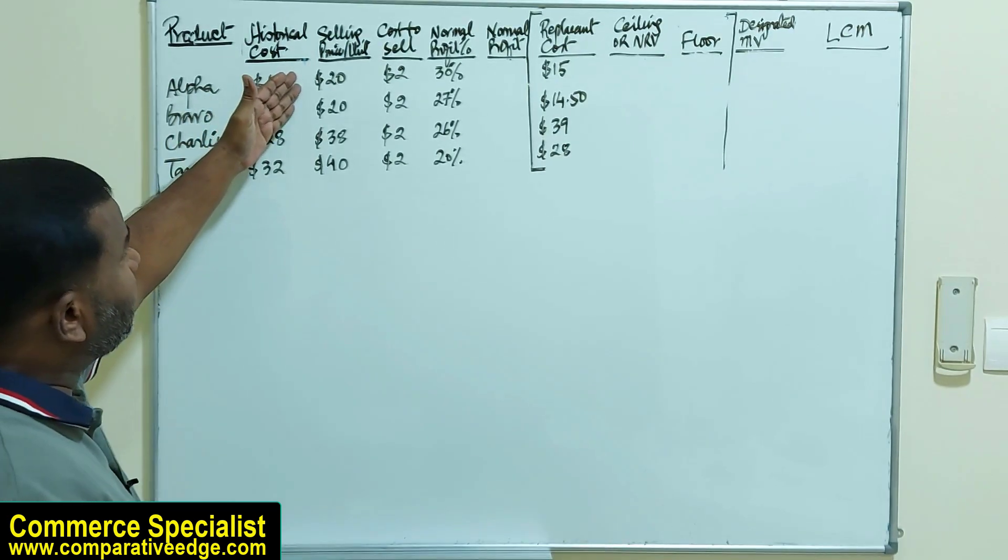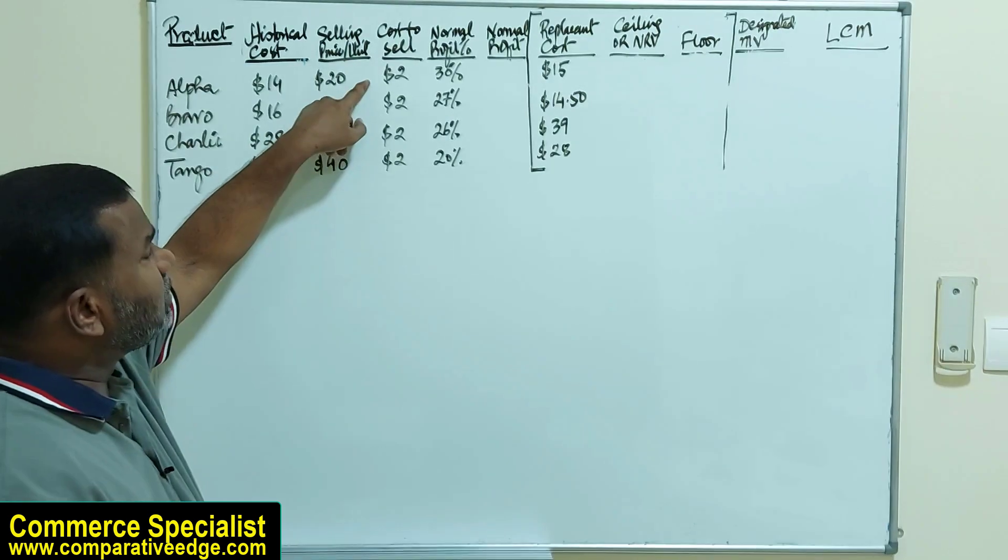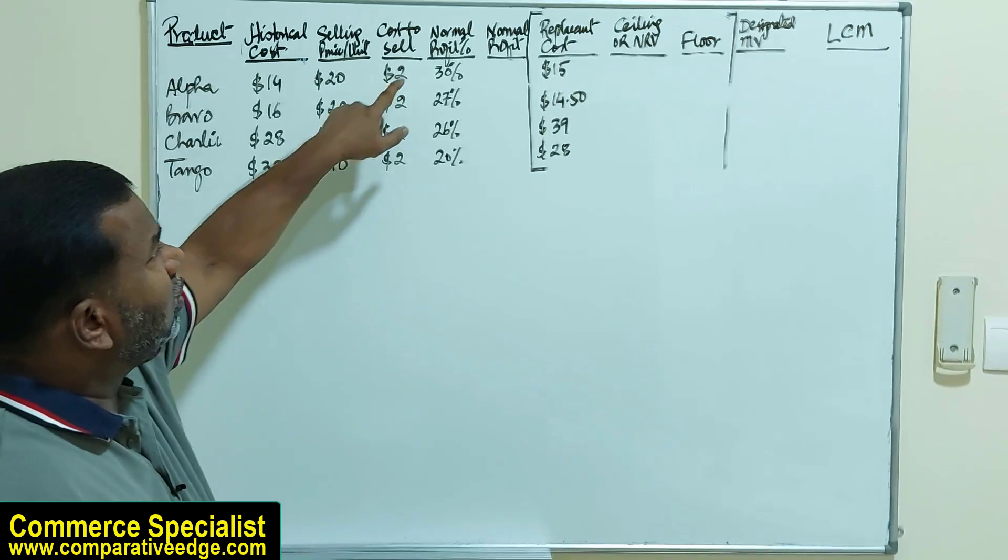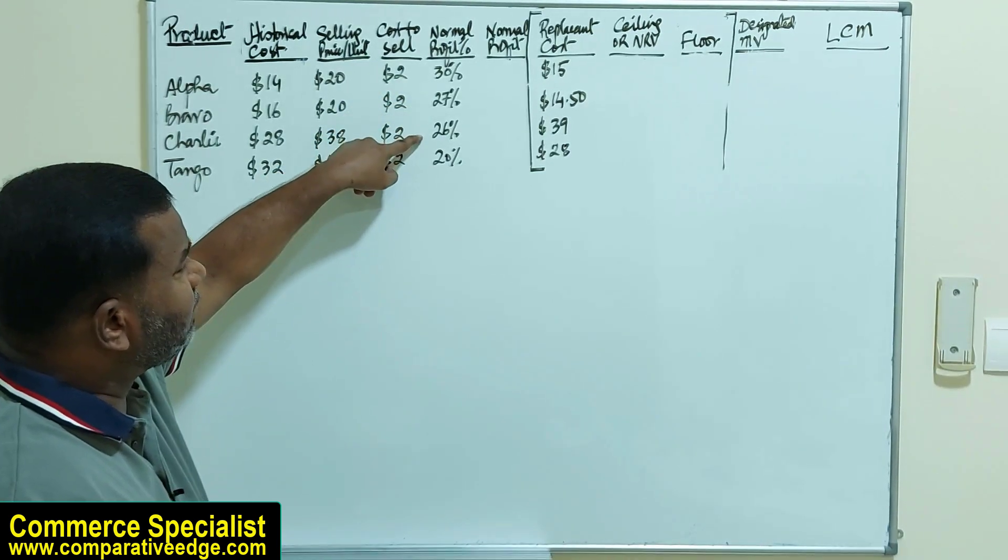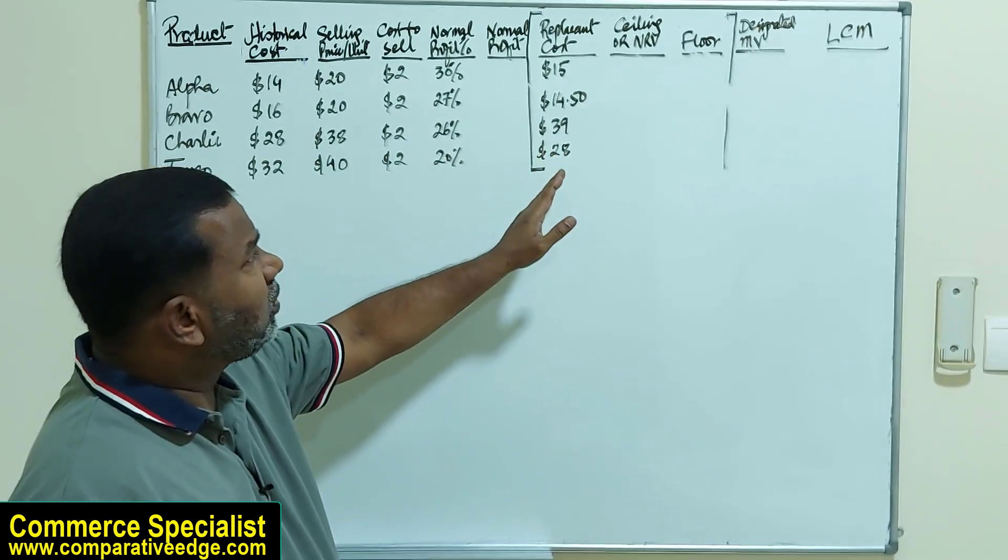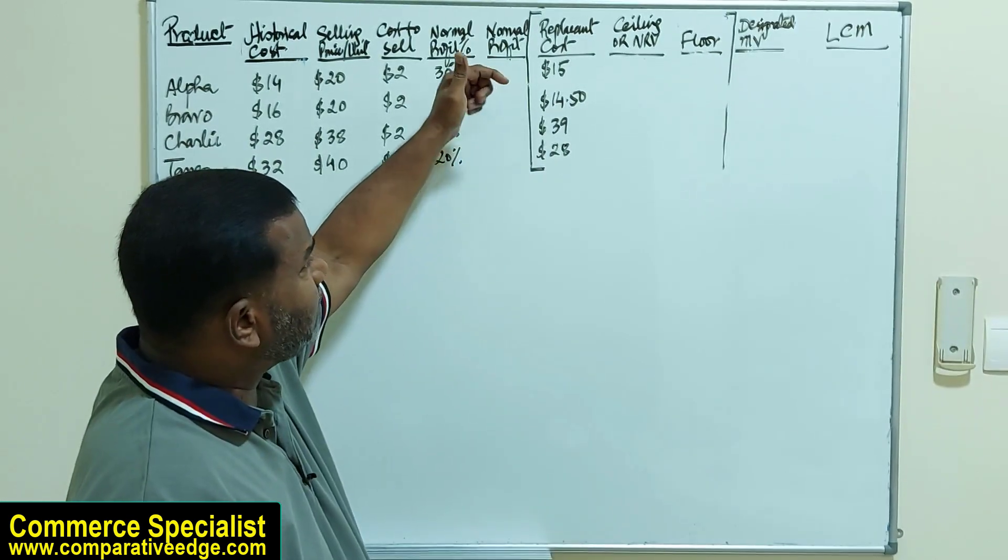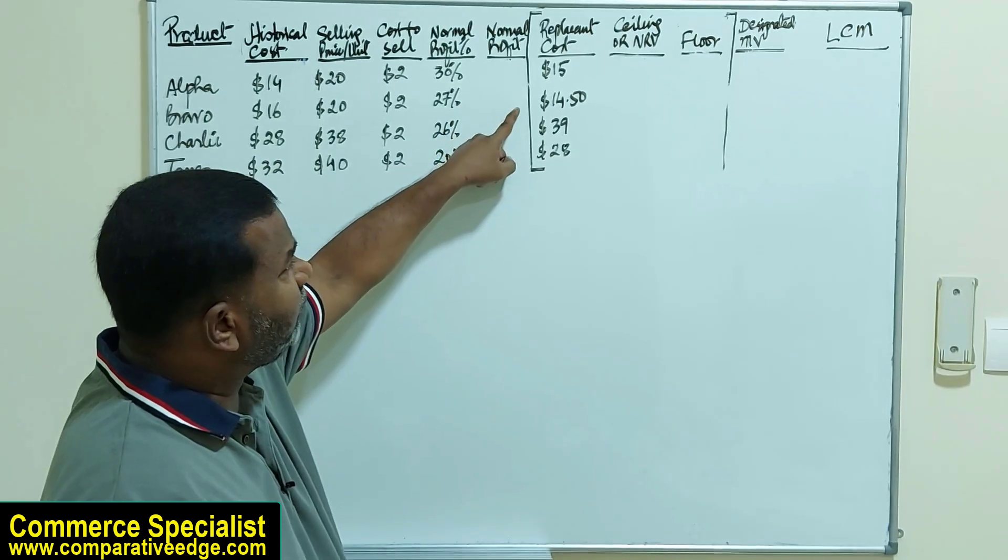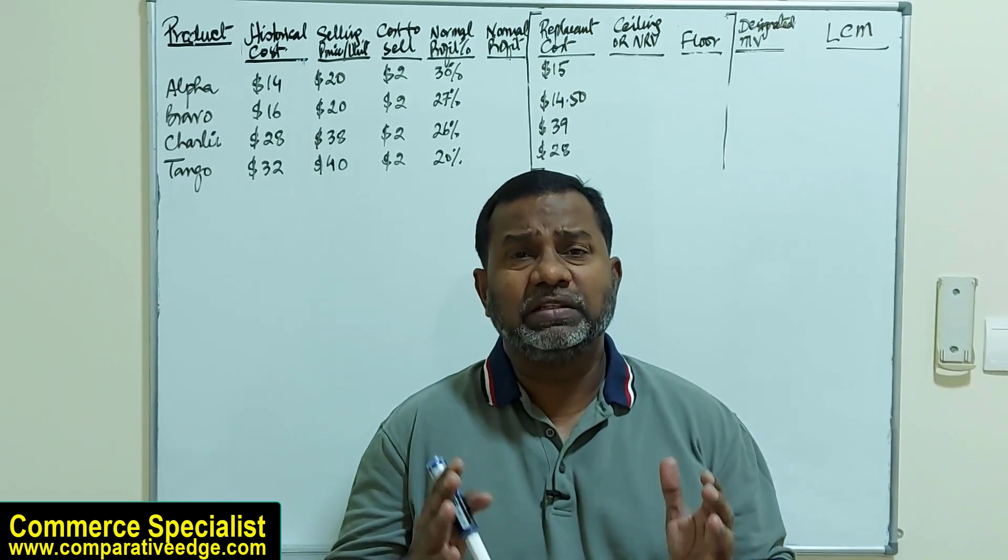Estimated selling price per unit is also given: $20, $20, $38, and $40. Cost necessary to sell is $2 each. Normal profit margin is given as 30%, 27%, 26%, and 20%. Replacement cost is also given: if we purchase these units as of today, it will cost $15, $14.50, $39, and $28 per unit.